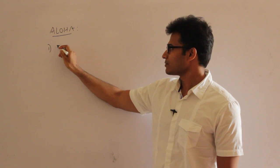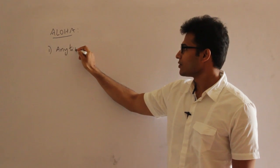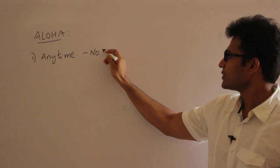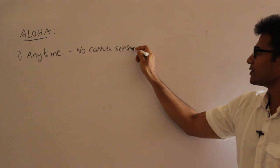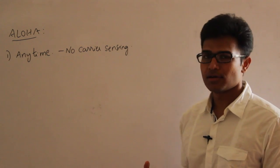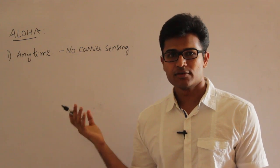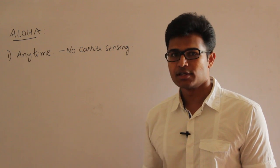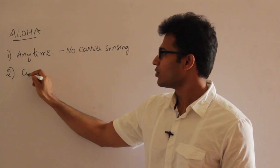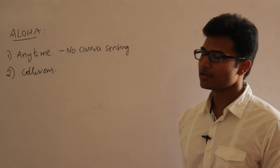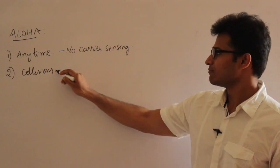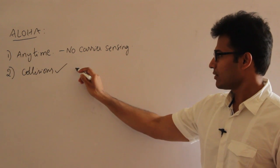The first rule of Aloha is that any station could transmit data anytime. There is no carrier sensing — you need not sense the carrier at all. Even if data is currently being transmitted on the channel, you could still transmit. Because of this, collisions are possible. If you are not sensing the carrier and data is already on the way, your data is going to collide.